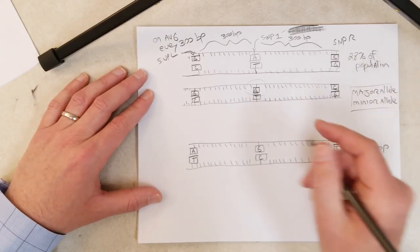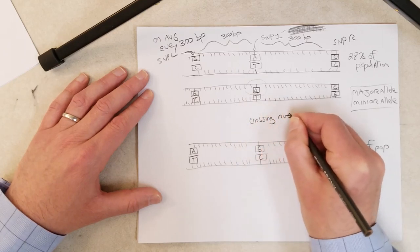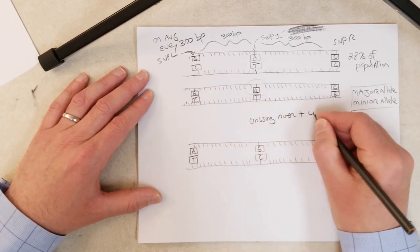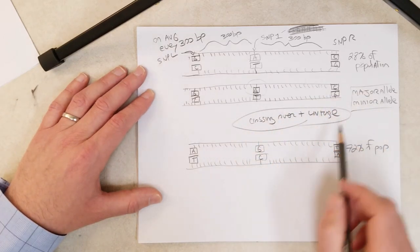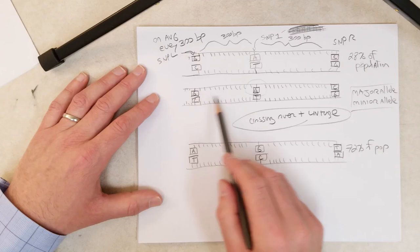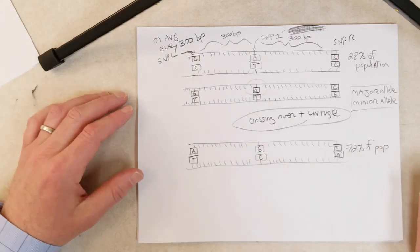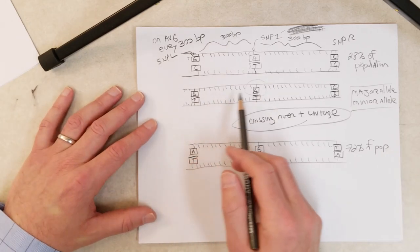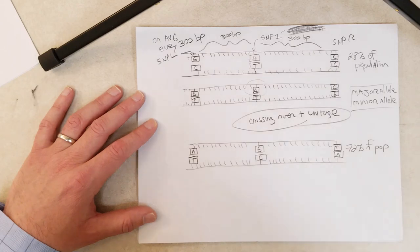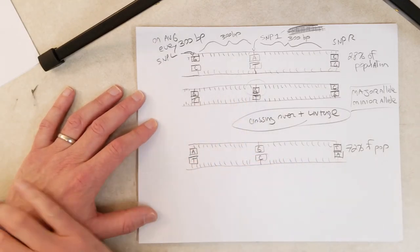Why is that the case? It has to do with crossing over and linkage. The closer two things are together, the more likely they are to be transmitted together through meiosis. Crossing over doesn't occur between every position on a chromosome during meiosis, so nearby SNPs tend to stick together.